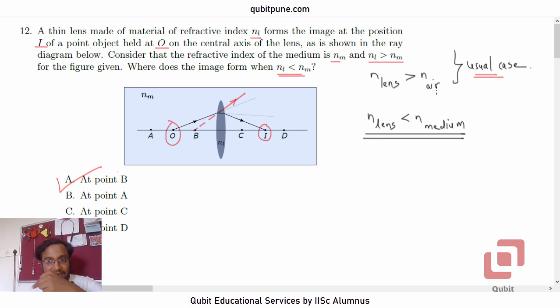For the other case, unusual case, it is going to bend outwards. It is going to behave as if it were a diverging lens or a concave lens.